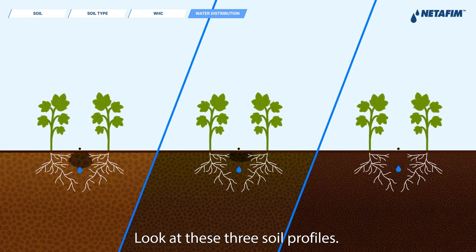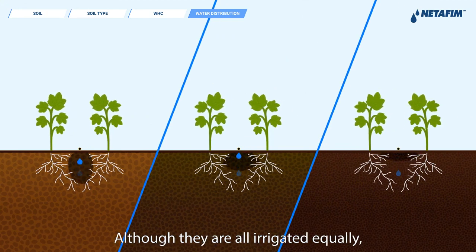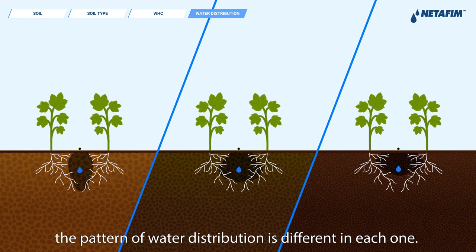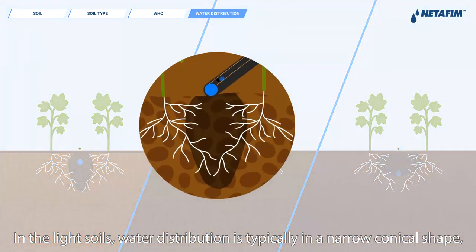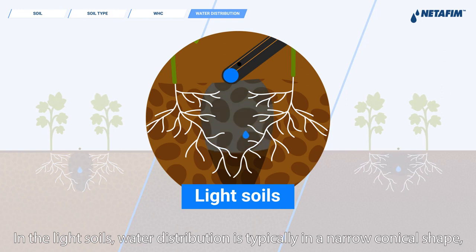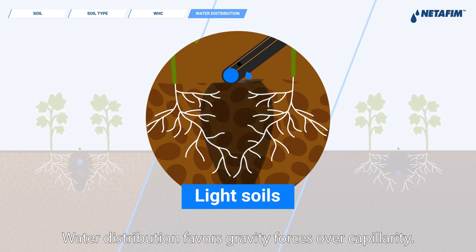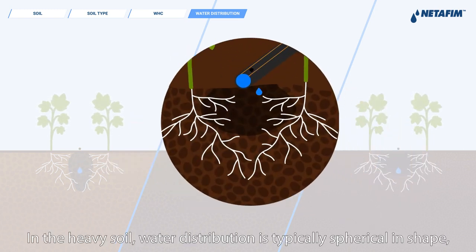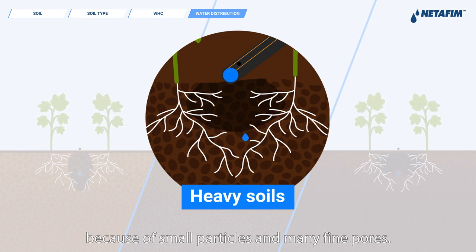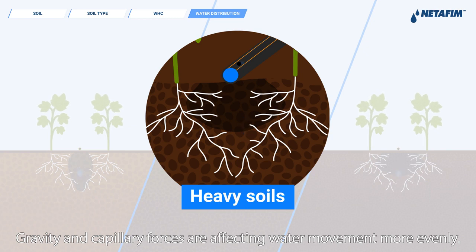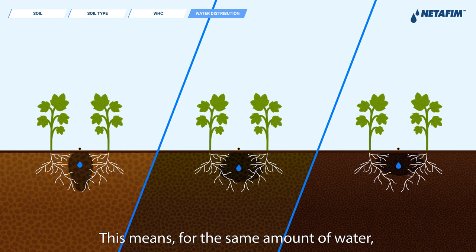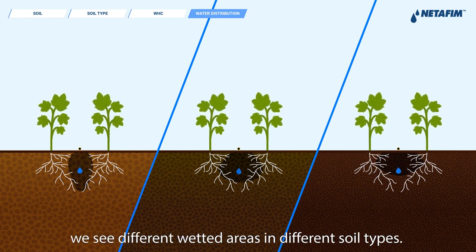Look at these three soil profiles. Although they are all irrigated equally, the pattern of water distribution is different in each one. In light soils, water distribution is typically in a narrow conical shape. Because of the large particles and fewer yet larger pores, water distribution favors gravity forces over capillarity. In heavy soil, water distribution is typically spherical in shape. Because of small particles and many fine pores, gravity and capillary forces affect water movement more evenly. This means for the same amount of water, we see different wetted areas in different soil types.